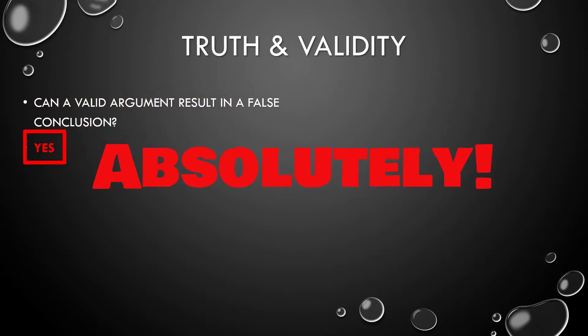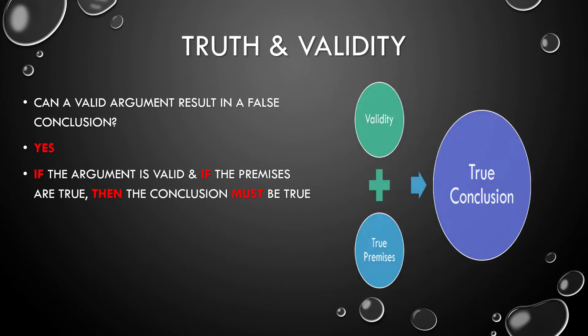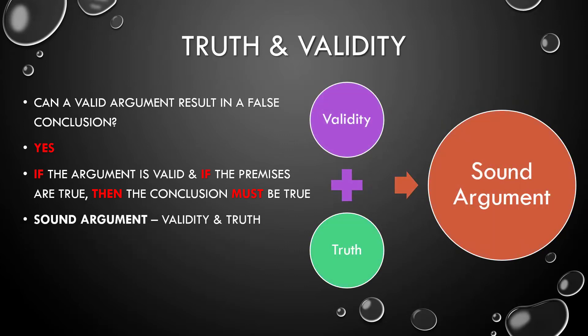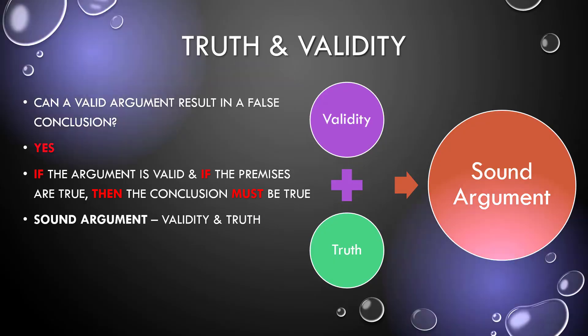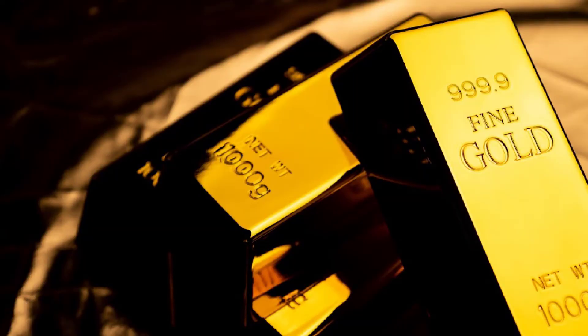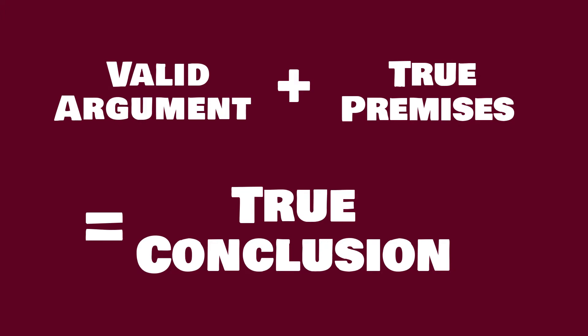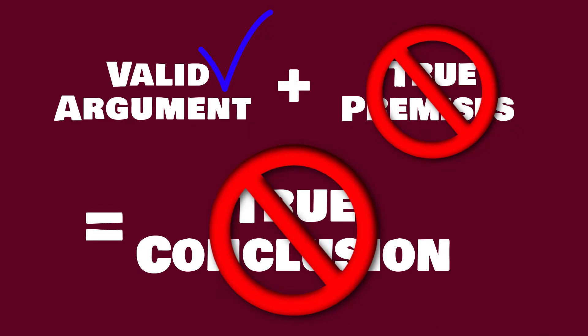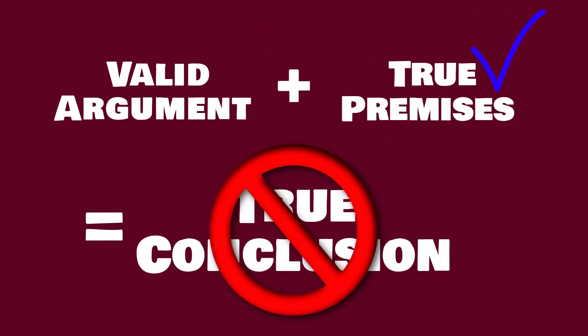Now the question is: can a valid argument result in a false conclusion? Well, yes — absolutely it can. Remember, validity is a property of a conclusion's formal relationship to its premises. If the argument is valid and if the premises are true, then the conclusion must be true — we need both. If we have both validity and truth, we have a sound argument, and this is the gold standard. A valid argument may however have a false premise. If the conclusion is false and the argument is valid, then there must be at least one false premise.